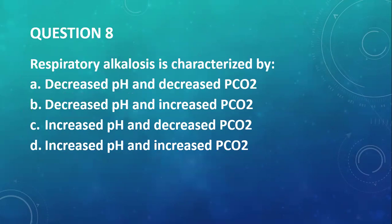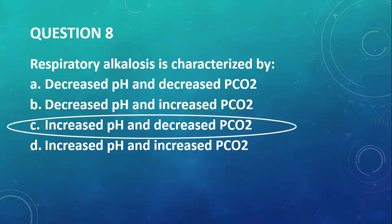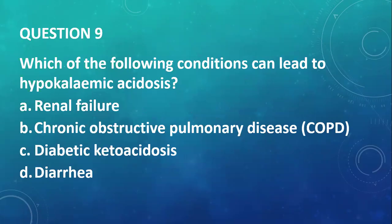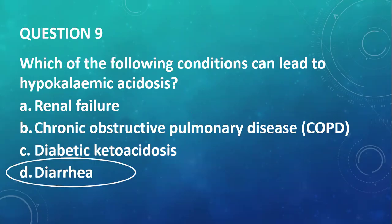Question number eight: respiratory alkalosis is characterized by an increased pH and a decreased PCO2, because respiratory alkalosis is caused by hyperventilation. Question number nine: which of the following conditions can lead to hypokalemic acidosis? Usually, acidosis is followed by hyperkalemia, but in this case you have acidosis characterized by hypokalemia. The condition that can lead to this is diarrhea.